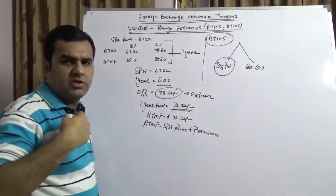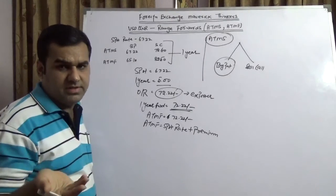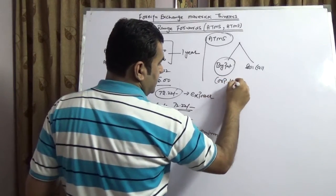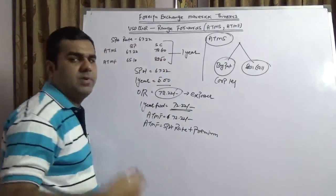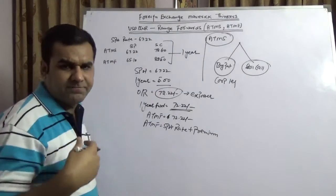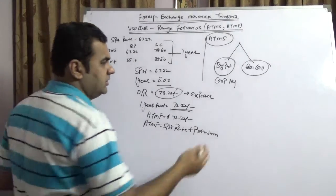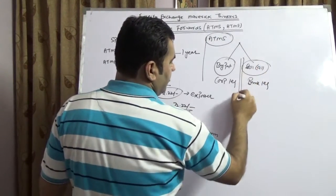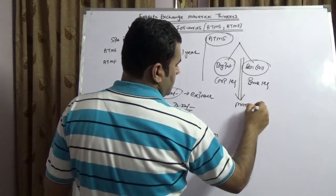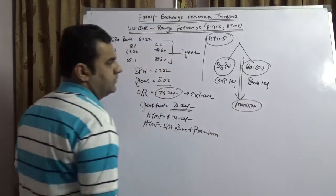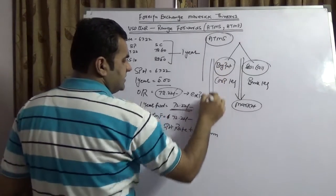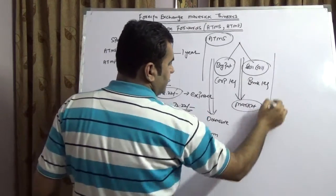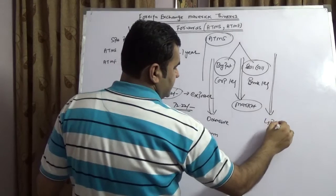Range forward exporters would have two legs: one is buy put and another is sell call. Buy put means you as a corporate selling your receivables is having the right to sell, so this is corporate leg. Sell call means the corporate is obliged to sell to a bank, or bank is having right to buy from a corporate, so this is bank leg.